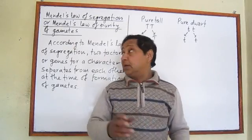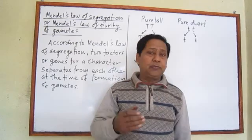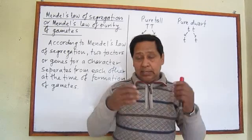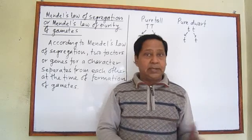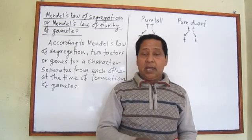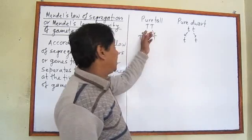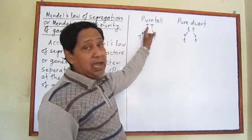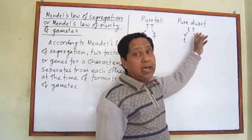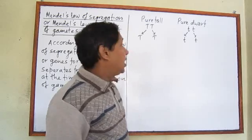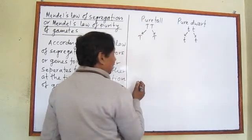I want to tell you something related to Mendel's Law of Segregation. Before this, we have to understand his experiment of tall pea plant and dwarf pea plant. What he did previously: he took a pure tall pea plant and crossed it with a pure dwarf pea plant. Pure tall means both genes carry the character of being tall, and pure dwarf means both genes carry the character of being dwarf.